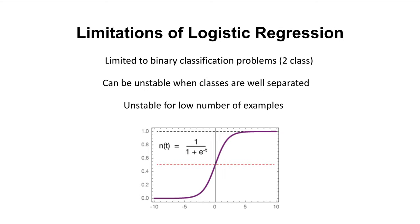In order to understand why we use linear discriminant analysis, we have to understand the limitations of logistic regression. Logistic regression uses a sigmoid function that gives us a probability output, and we have a decision boundary that separates two binary classes. For example, a logistic regression classifier comparing whether an image is a cat or a dog: if the probability is above 0.5 at the decision boundary, it's a cat; if below 0.5, it's a dog. The decision boundary can be set at any arbitrary value, as long as it makes sense for the problem.